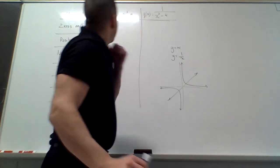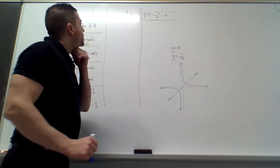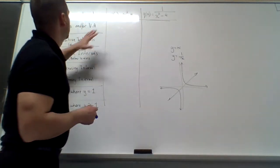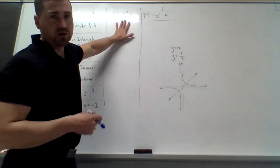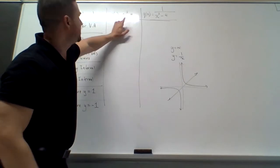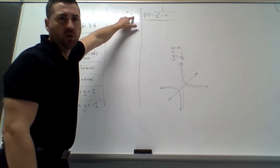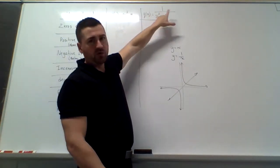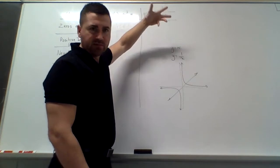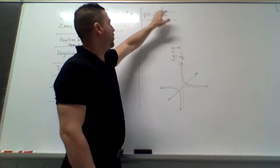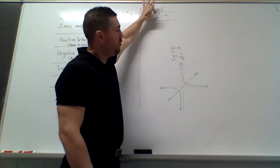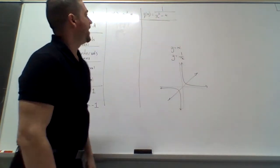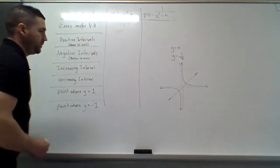The first question asks — we have our parent function here, it's x squared minus 4. And then the reciprocal function would be the same thing but over 1, so 1 over x squared minus 4.